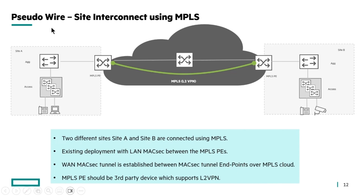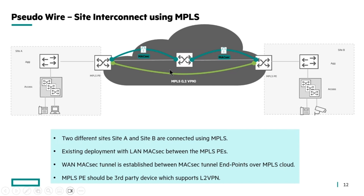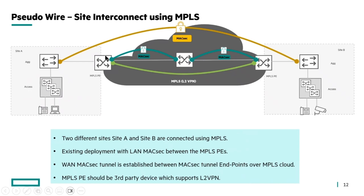The next use case is pseudo-wire — site interconnect using MPLS. Consider two sites, Site A and Site B, with provider-edge devices that are MPLS-capable, connected via an MPLS L2 VPN between the provider edges. In an MPLS network, there could be LAN-MACSEC channels between MPLS devices. With the custom EtherType, it is possible to establish a WAN-MACSEC channel between the sites, protecting the data along with the MPLS L2 VPN. Note that the MPLS-PE devices here should be third-party devices supporting L2 VPN, as our CX portfolio does not currently support MPLS-PE functionality.